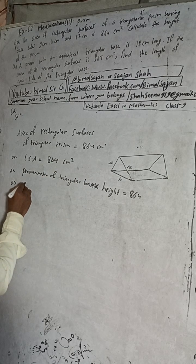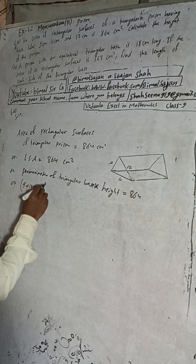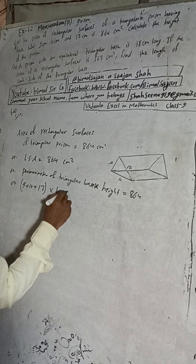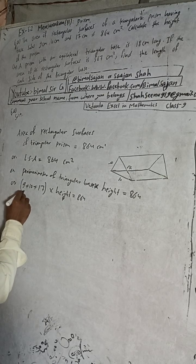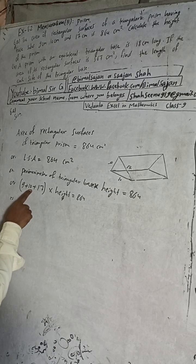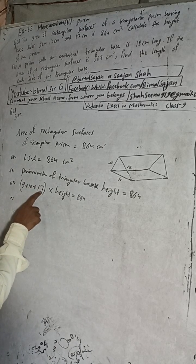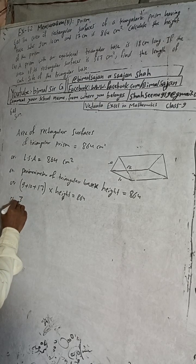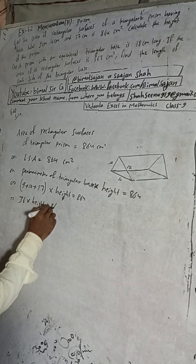Perimeter of the triangular base equals 9 plus 10 plus 17, which gives 36. So the equation becomes: 36 into height equals 864.